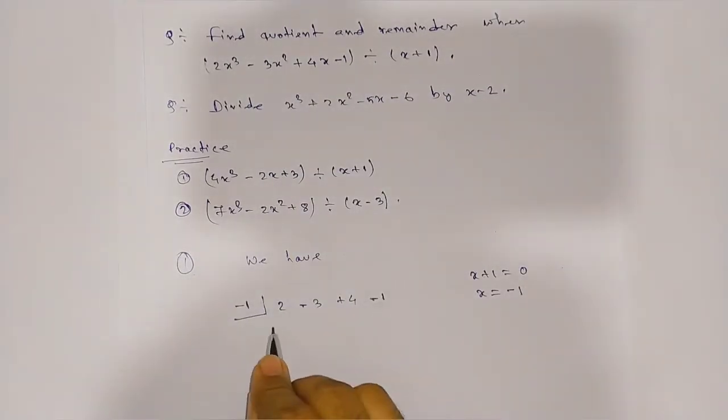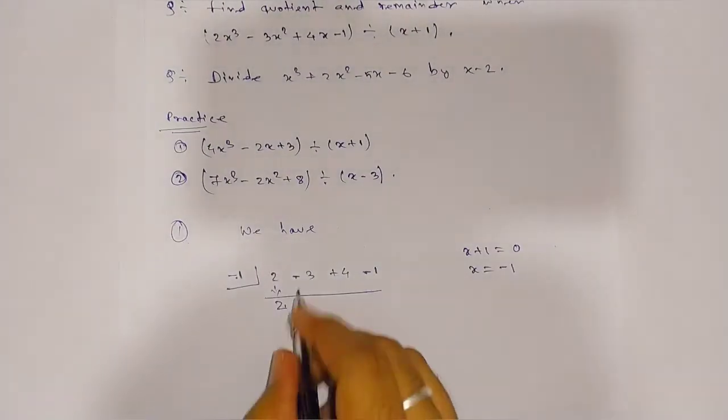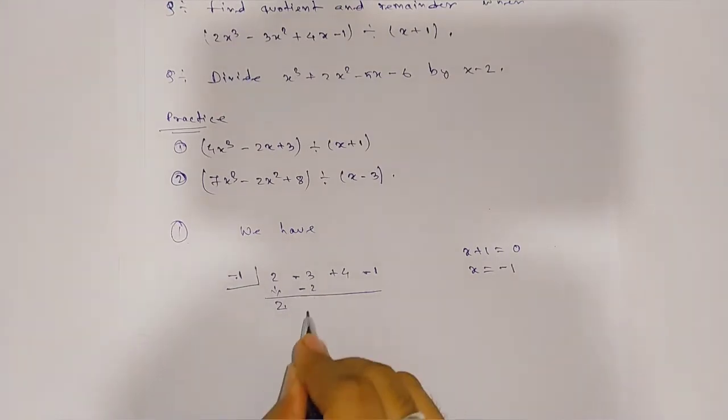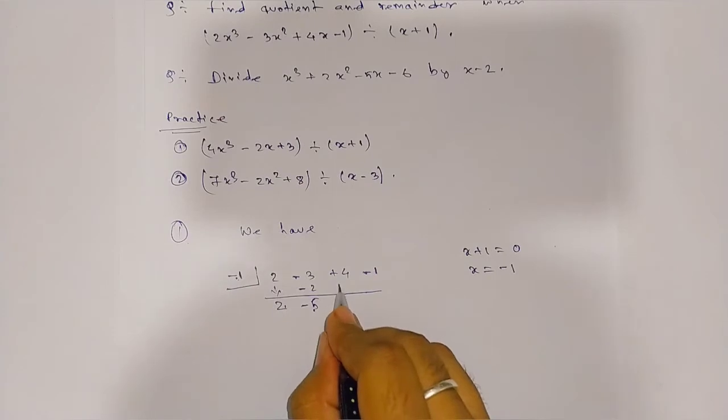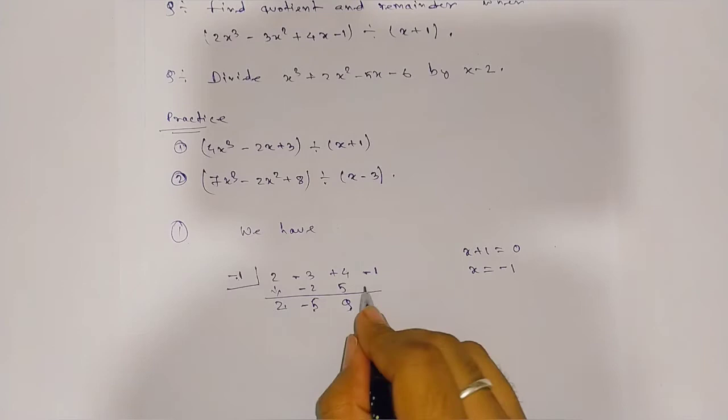Take 2 here. Multiply minus 1 by 2 to get minus 2. Add to minus 3 to get minus 5. Multiply minus 5 by minus 1 to get plus 5. Add 4 and 5 to get 9. Multiply 9 by minus 1 to get minus 9. Add minus 1 and minus 9 to get minus 10.